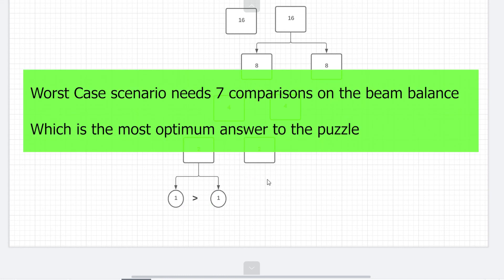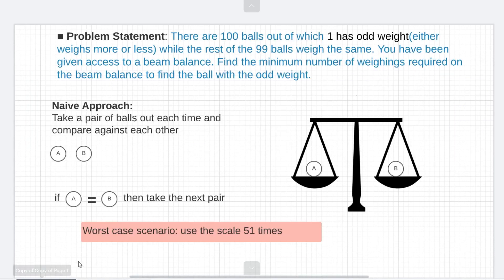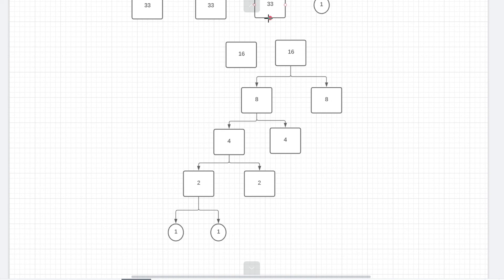So in our worst case scenario we need seven comparisons in total on the beam balance to figure out the odd ball which is our major upgrade from our naive approach. So if you remember the naive approach we had 51 comparisons in our worst case to figure out the odd ball. But using the divide and conquer approach that I just showed you you were able to do it in seven steps.